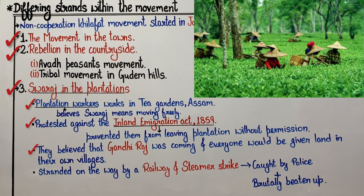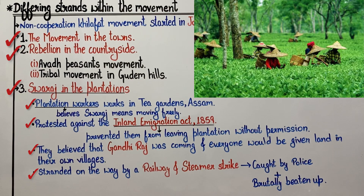After the non-cooperation movement started under Gandhi, these plantation workers believed they could return to their villages. So they left their plantations, but while going they were stopped and caught by British police. That covers both topics — the Tribal Movement in the Gudam Hills of Andhra Pradesh and Swaraj in Plantation.